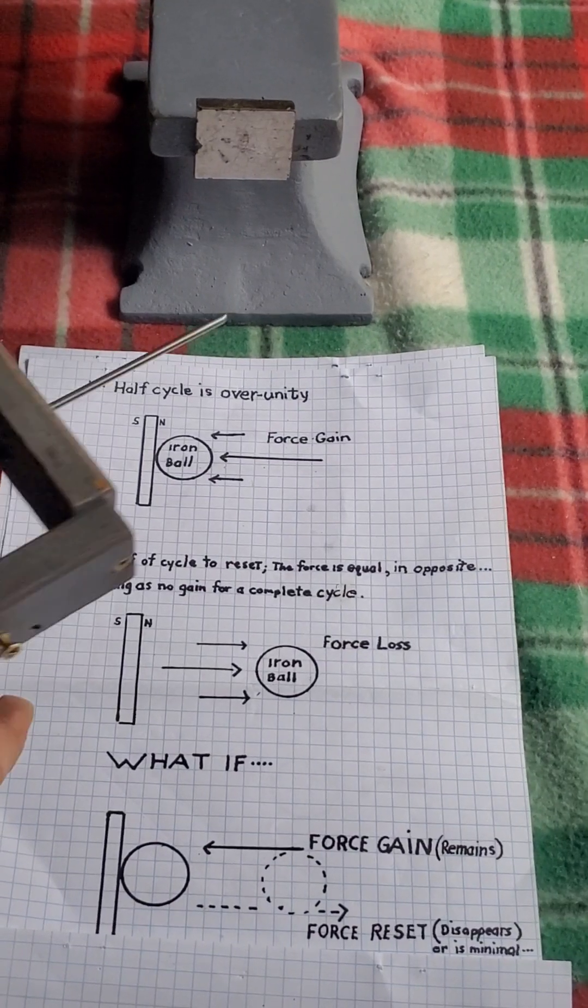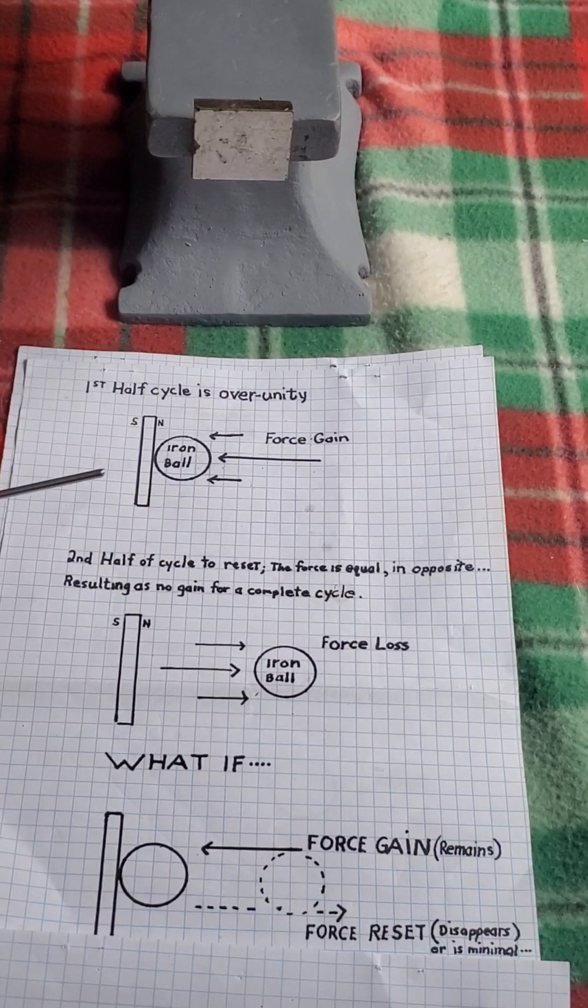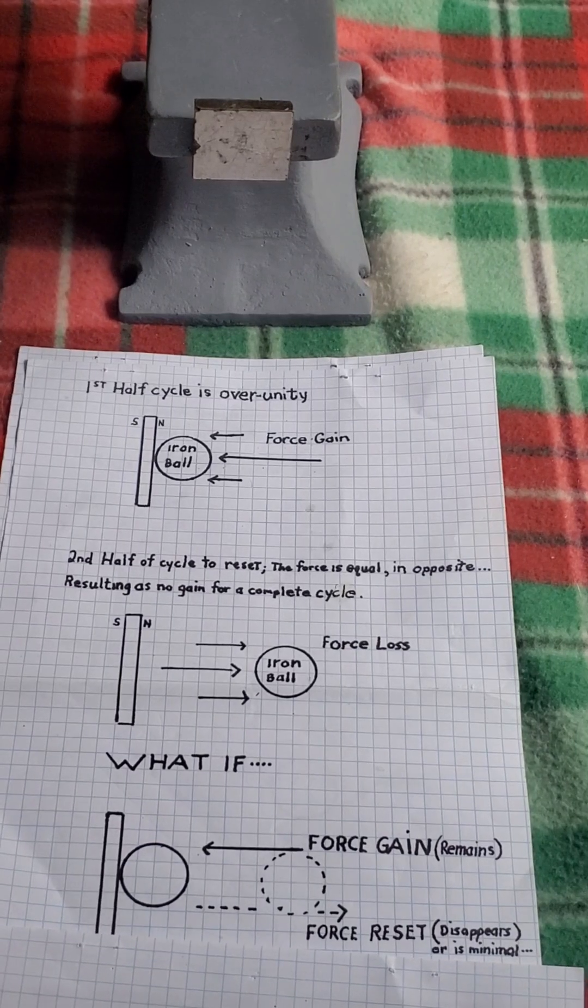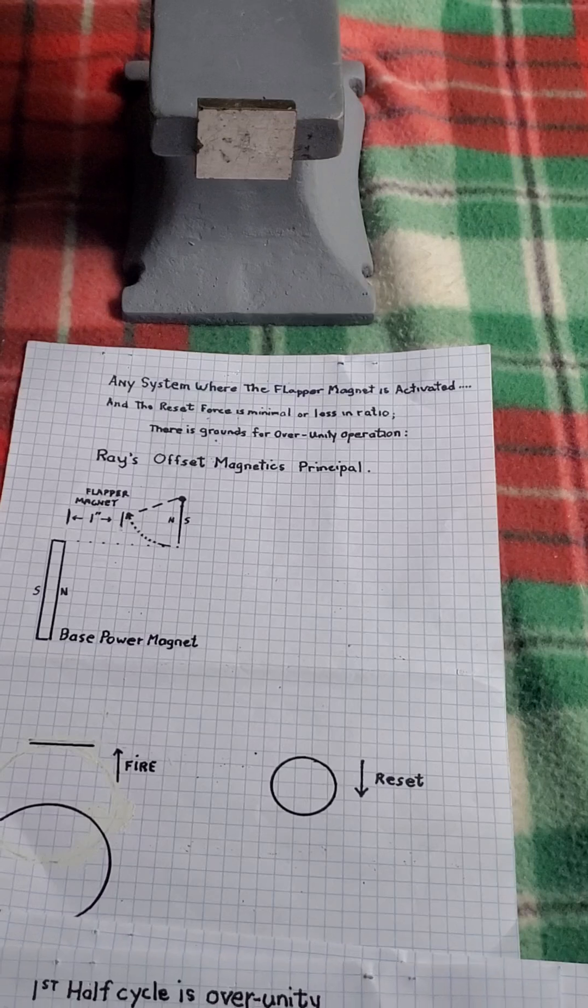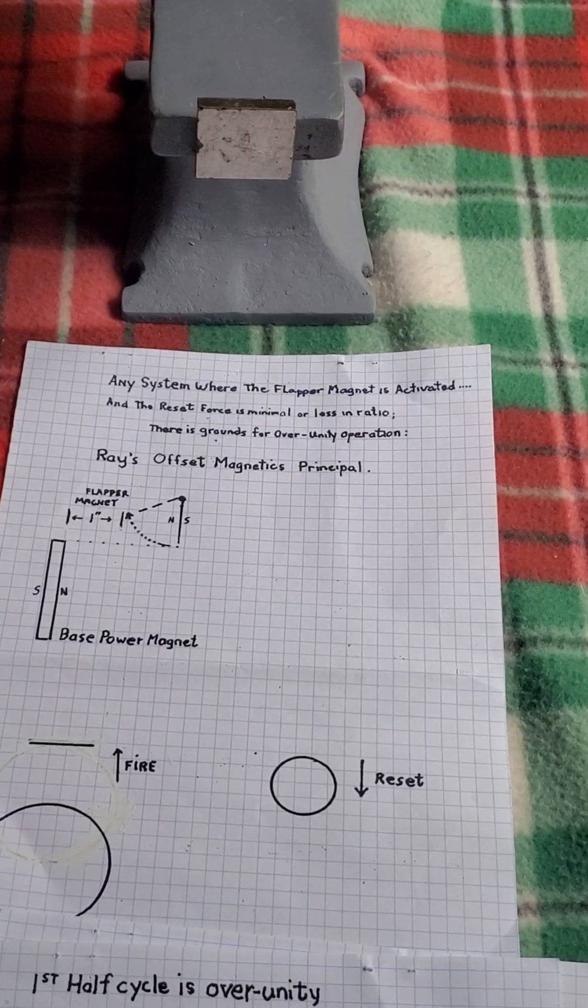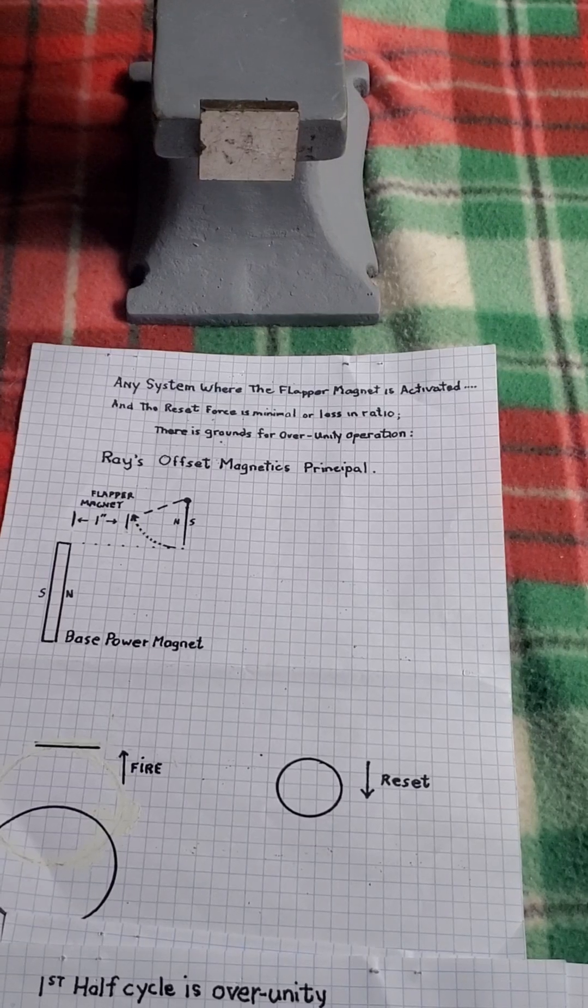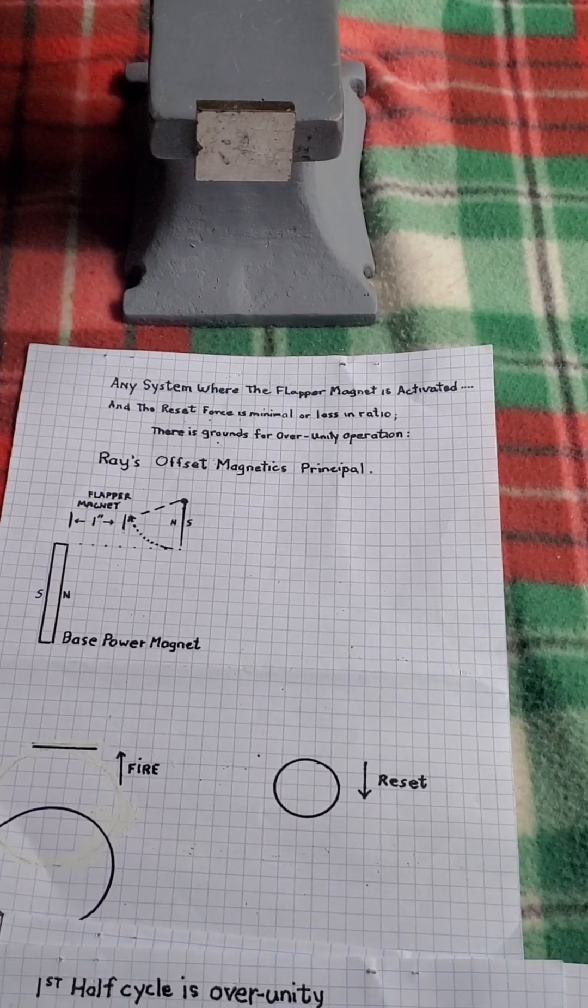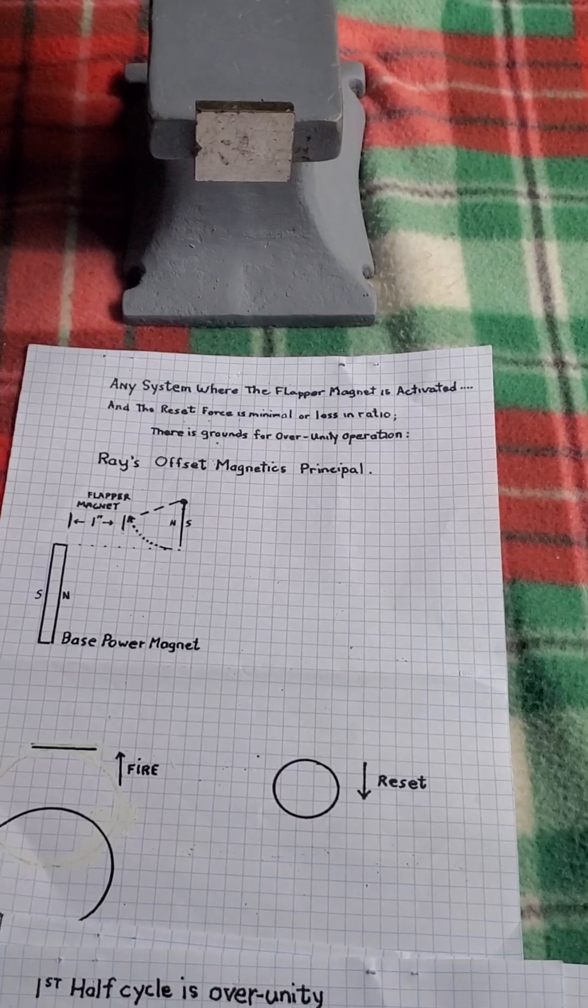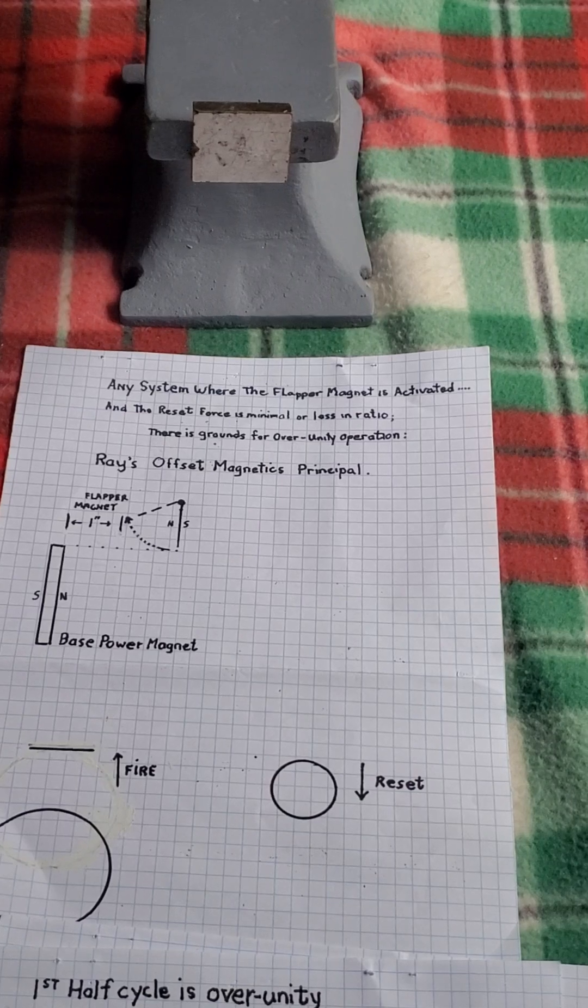This is where the flapper comes into play. Any system where the flapper magnet is activated and the reset is very minimal or less in ratio, there is grounds for an over-unity operation.